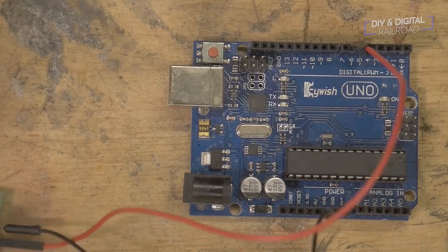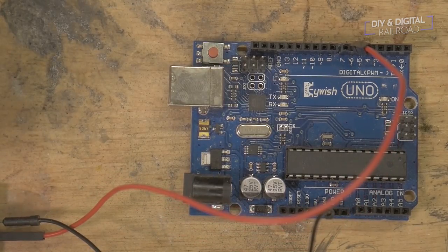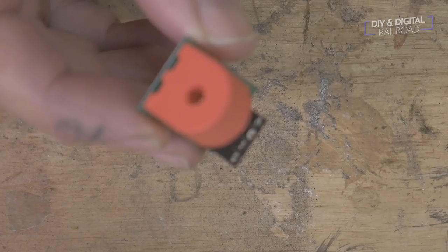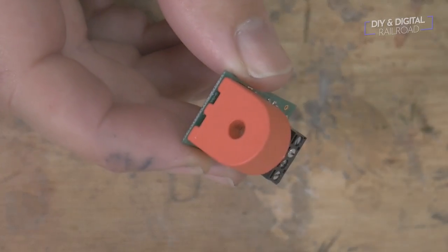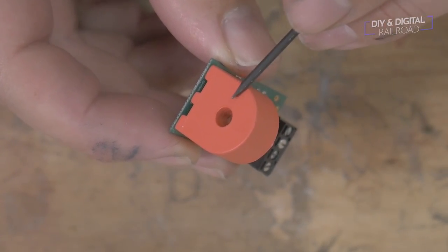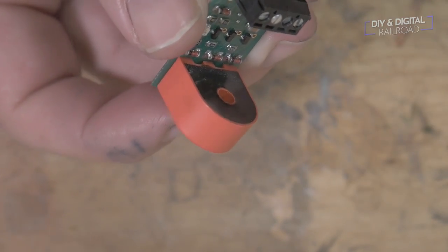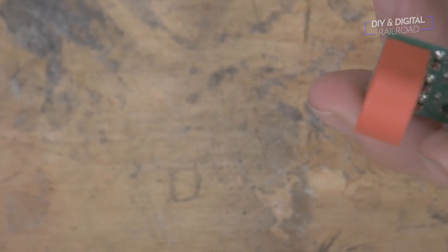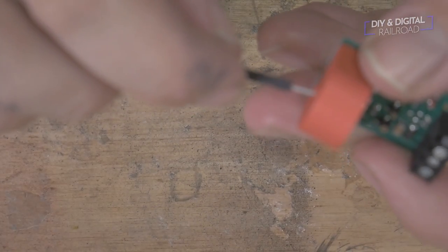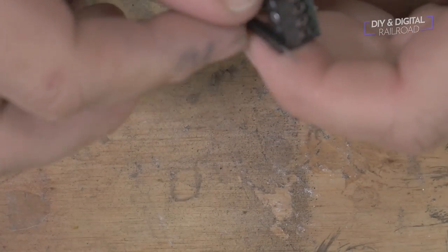Now for the BD20. The BD20 uses current sensing to detect occupancy, so we need to wrap one of the feeder wires around the detector. In this case I'm using just a regular wire to represent, and when I actually use it I will hook up a real feeder wire to the track.